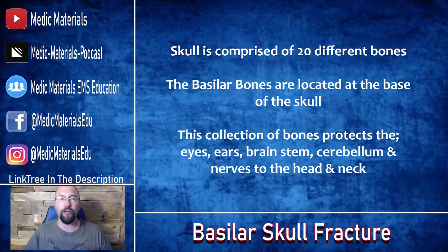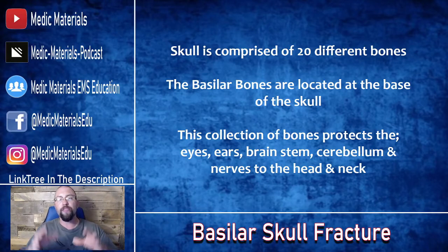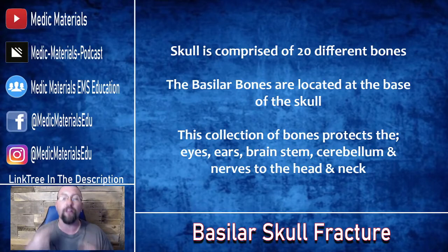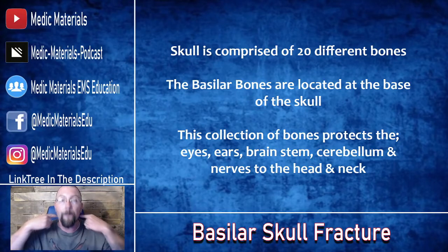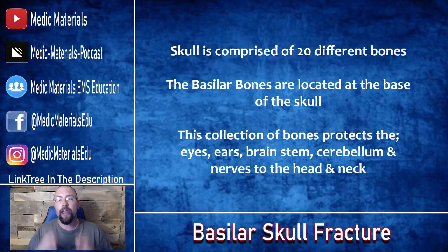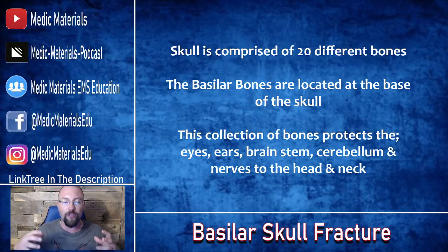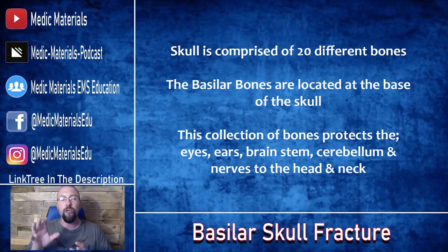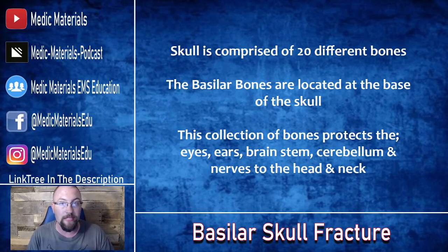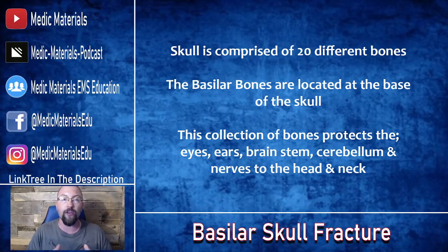We want to remember that the skull is comprised of about 20 different bones. The basilar bones are a collection of bones located at the base of the skull. These bones are so important in protecting major key structures within the brain — the eyes, the ears, the brainstem, the cerebellum, and the nerves that go into the head and the neck. All of these are key functions of life.